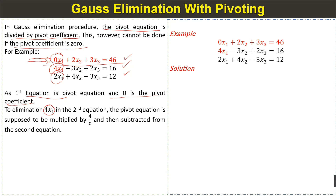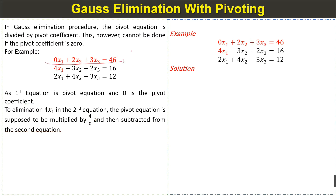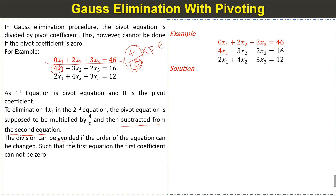To eliminate 4x1 in the second equation, the pivot equation is supposed to be multiplied by 4 and divided by 0. But since the pivot coefficient in the denominator is 0, this division cannot be performed.